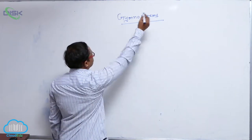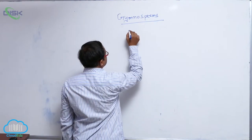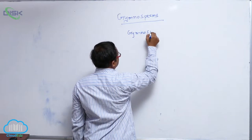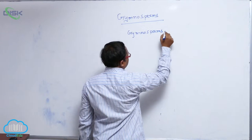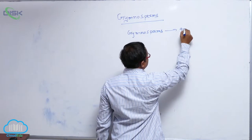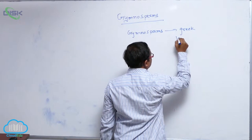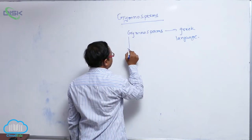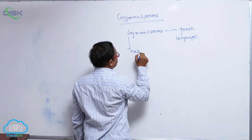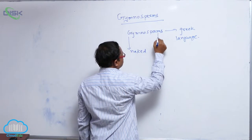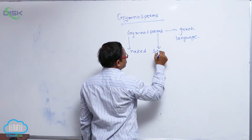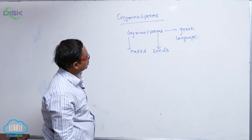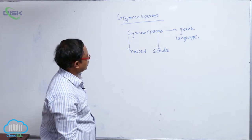Gymnosperms. The word Gymnosperms is derived from the Greek language, where 'Gymno' means naked and 'Sperms' means seeds. So Gymnosperms means naked seeds.